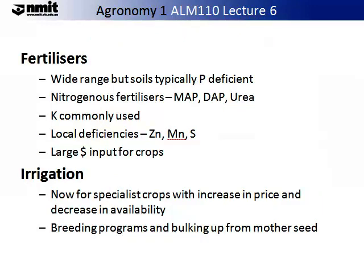Nutrients are essential for plant growth and are usually delivered in cropping systems via fertilisers. There are a wide range of soils in Australia, but typically they tend to be phosphorus deficient. Nitrogen is also a common fertiliser added to Australian soils, and this can be found predominantly in three forms: MAP, DAP or urea. We are conducting some experiments on urea in the Yangying teaching and research demonstrator. Potassium is commonly used too on Australian soils, and some of the local deficiencies we have are zinc, manganese and sulphur. They are large economic inputs for crops.